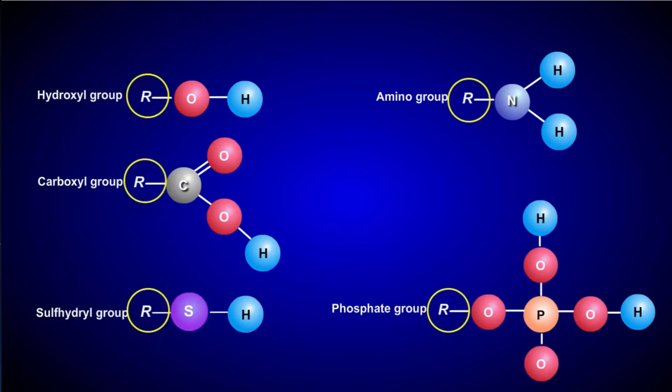In these diagrams, the R refers to where the functional group attaches to the carbon skeleton. The presence of a functional group changes the chemical reactivity of the biomolecule.